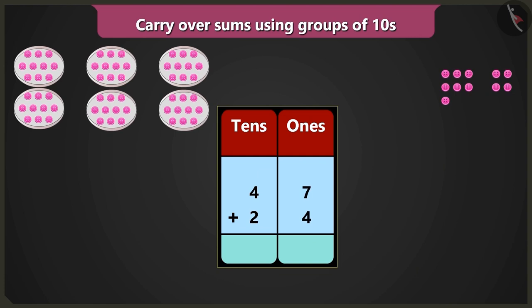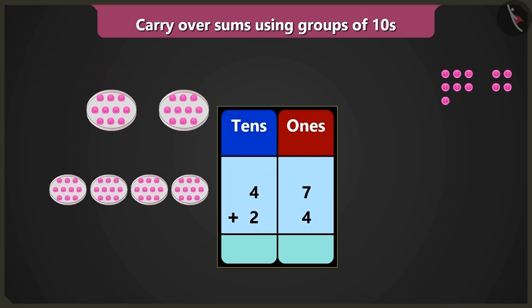Yes! Forty-seven buttons, that's four tens and seven ones. So we will write four in the box of tens and seven in the box of ones.